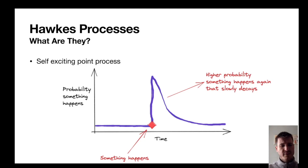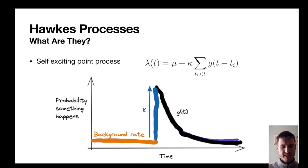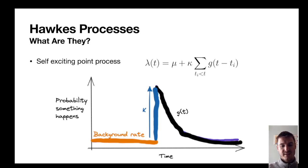So what is a Hawkes process? It is a self-exciting point process where each event increases the probability another event happens. We can view this as an intensity that increases after each event and decays if no further event happens. Mathematically we can write this intensity as three components: a background rate (the orange line) which is the probability an event occurs randomly; the kappa rate, which is the excitation parameter controlling how much the probability increases with each event; and a kernel G(t), which is the decay of this excitation over time.